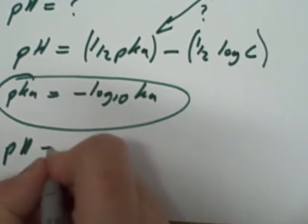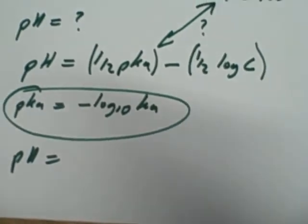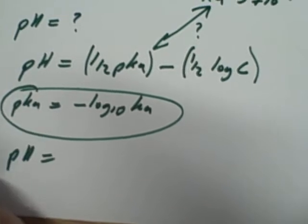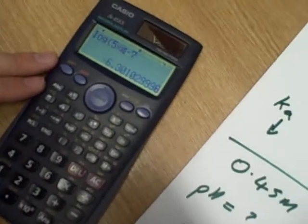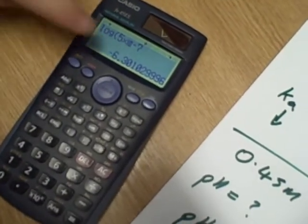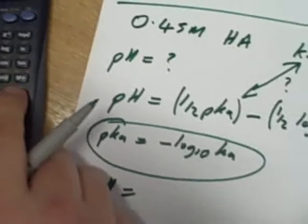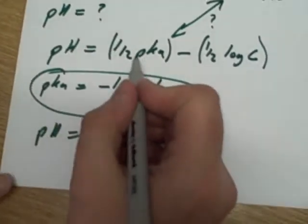Let's get these numbers in. Let's convert this made-up Ka into a pKa. So log 5 times 10 to the minus 7 gives me 6, and I've got to take that minus off, so it's 6.3. But the equation says a half pKa, so 6.3 divided by 2 is 3.15. Close the bracket, put a minus in.